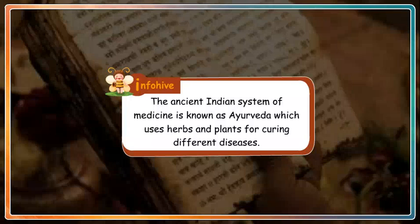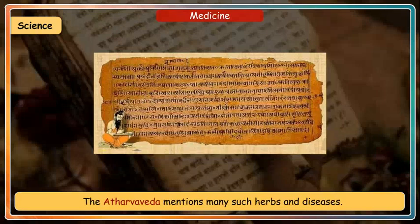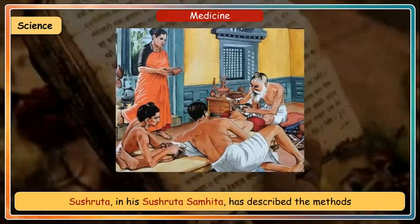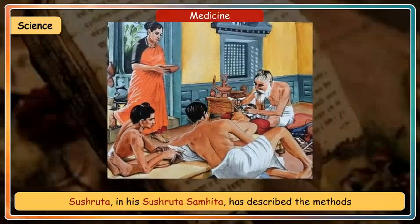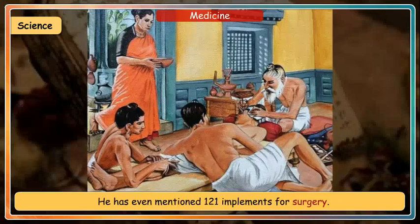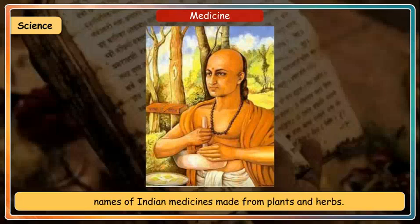The ancient Indian system of medicine is known as Ayurveda, which uses herbs and plants for curing different diseases. Diagnosis and treatment by the use of herbs is an ancient system; the Atharva Veda mentions many such herbs and diseases. Sushruta, Charak and Dhanvantri were great exponents of the Ayurvedic system. Sushruta's Sushruta Samhita describes methods of cosmetic surgery, operating on cataracts, stone disease and other conditions, mentioning 121 implements for surgery. The Charak Samhita by Charak is a compilation of Indian medicines made from plants and herbs.